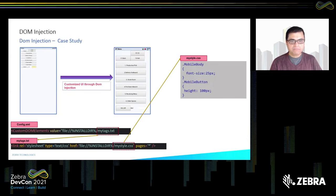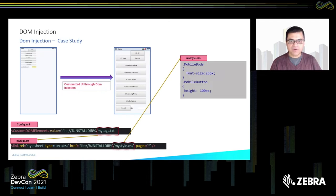You can also use DOM Injection to make full use of the screen size — whether portrait or landscape — by adjusting font size and element height so content fills the screen, making it more user-friendly and utilizing the full real estate of the display.